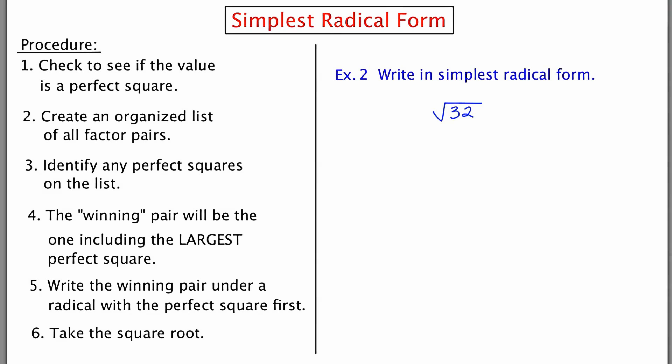In our second example, we're going to break down the radical square root 32. Again, going through the procedure list, number 1, check to see if the value is a perfect square. 32 is not a perfect square, so I'm going to try to break it down. Step 2, create an organized list of all factor pairs.